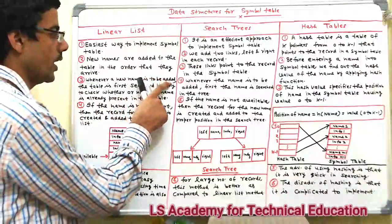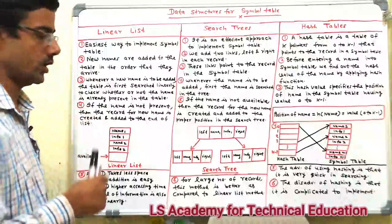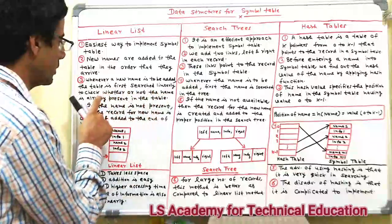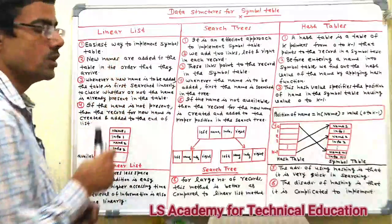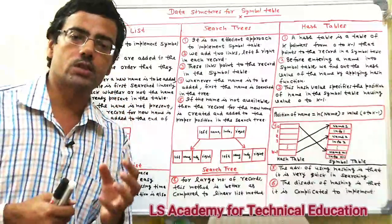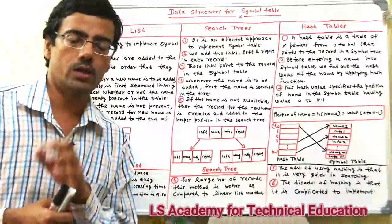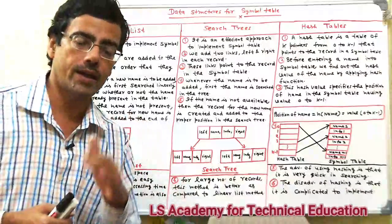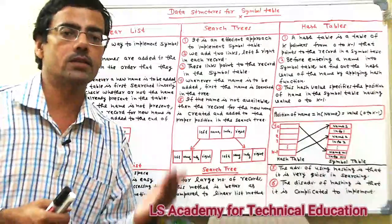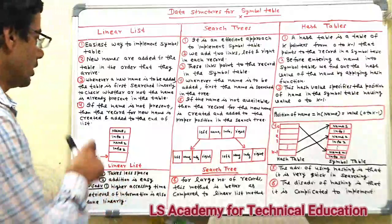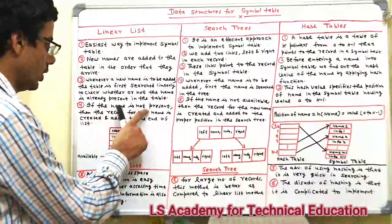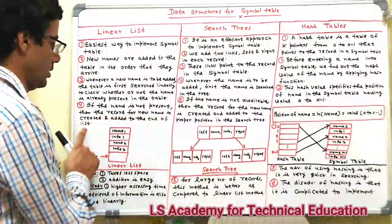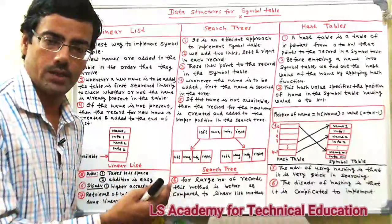Whenever a new name is to be added, the table is first searched linearly to check whether or not the name is already present in the table. If the name is not present, then the record for the new name is created and added to the end of the list.